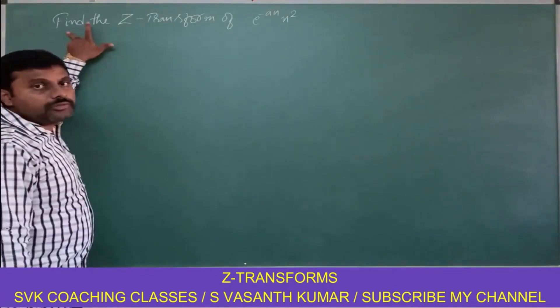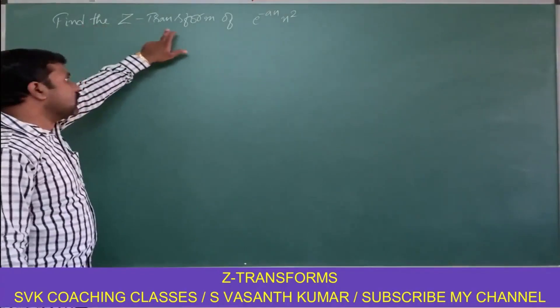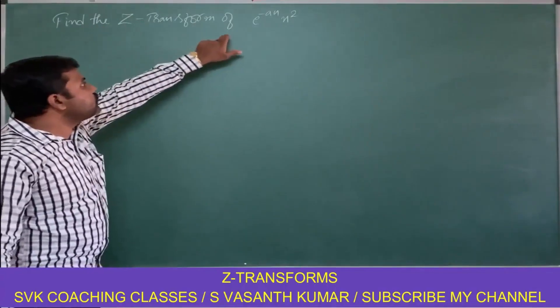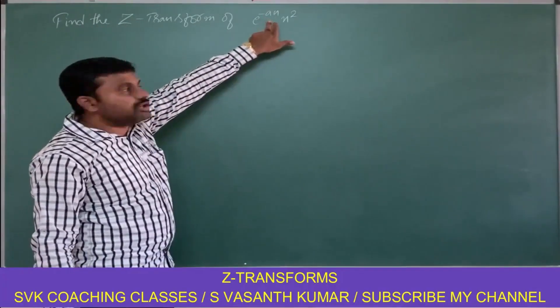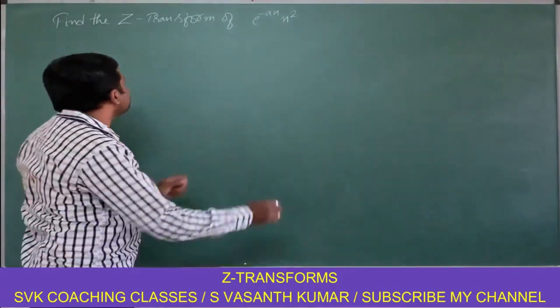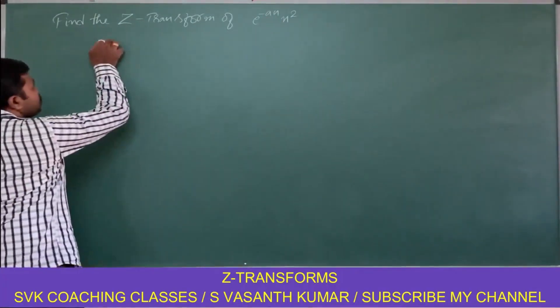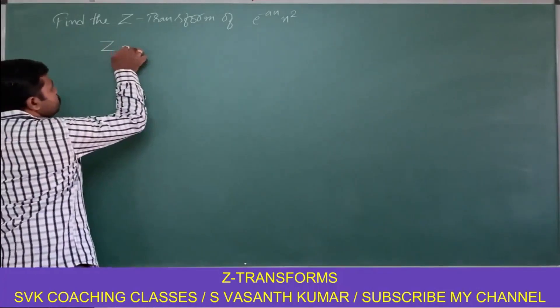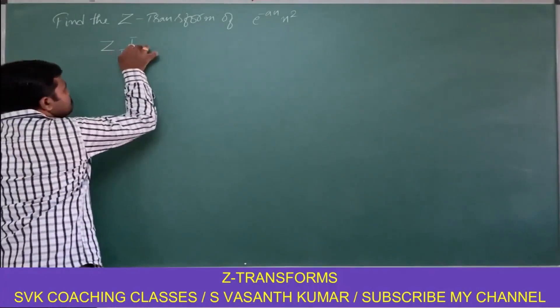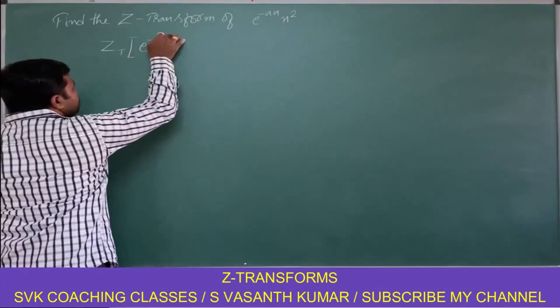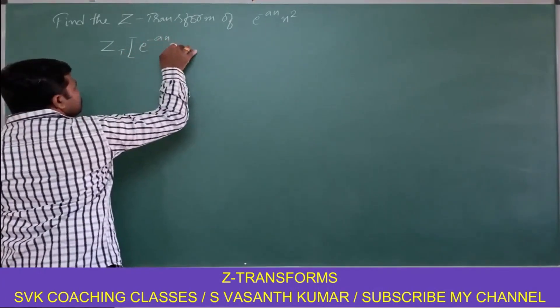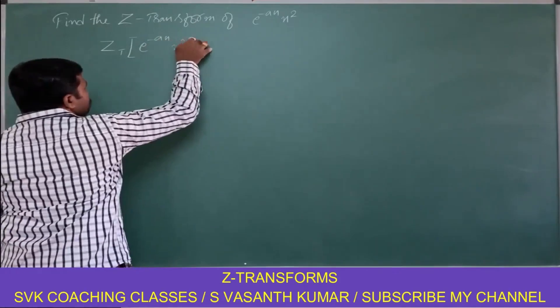Consider the problem: find the Z-transform of e power minus a·n into n square.